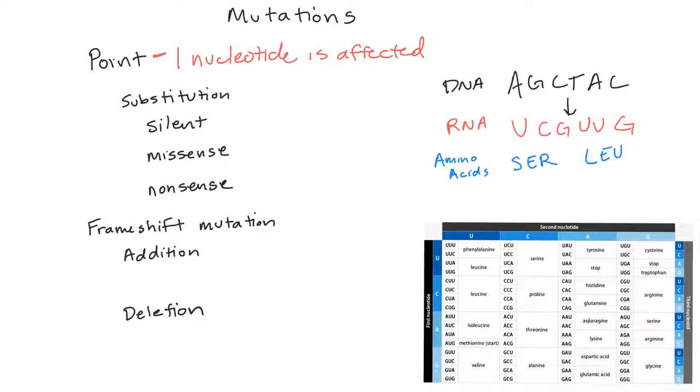In a substitution, one base is replaced with a different one. And that can cause one of three different types of mutations: silent, missense, or nonsense.